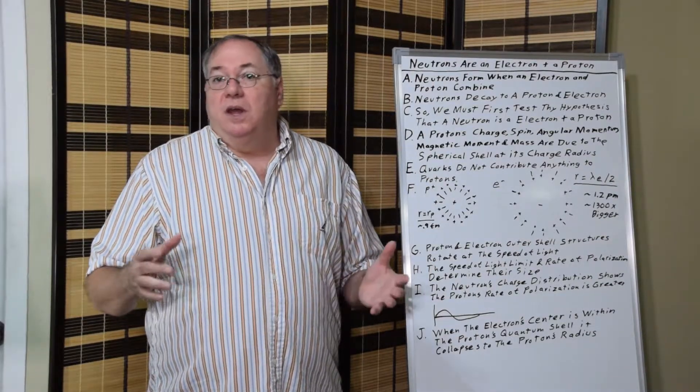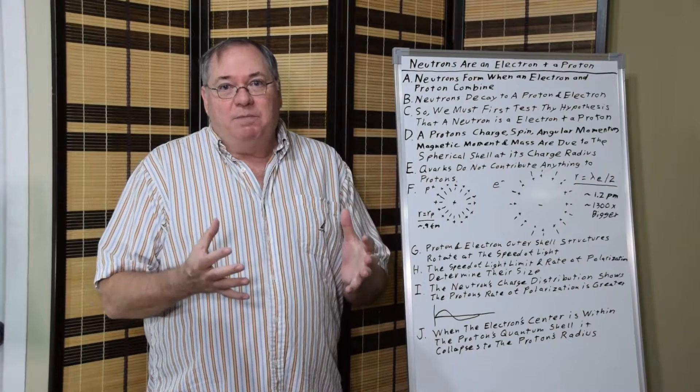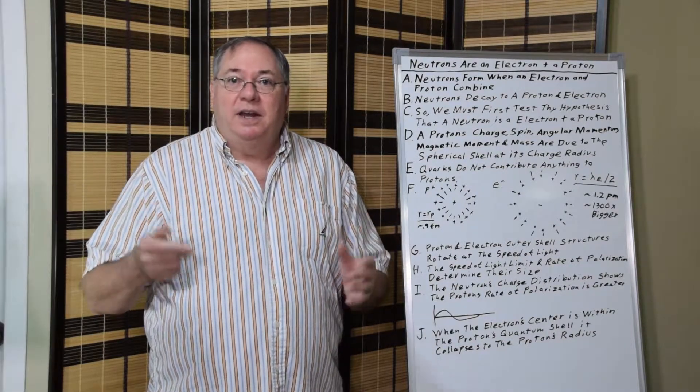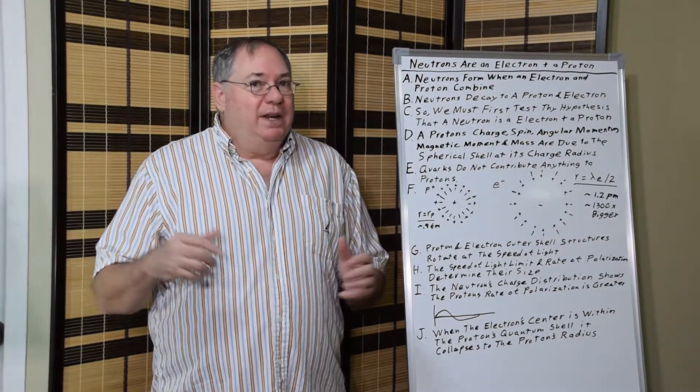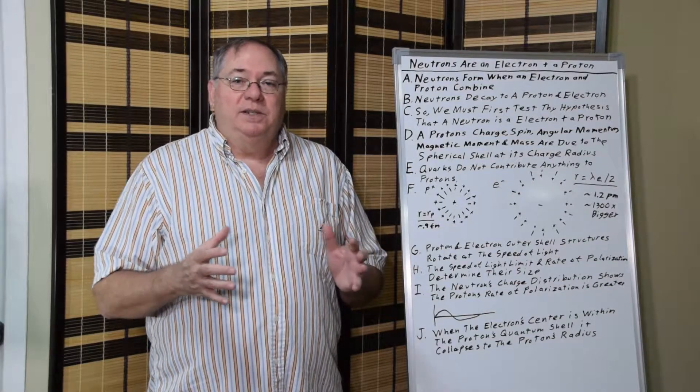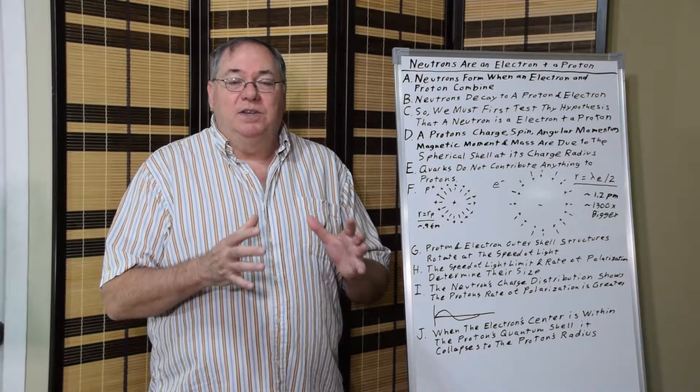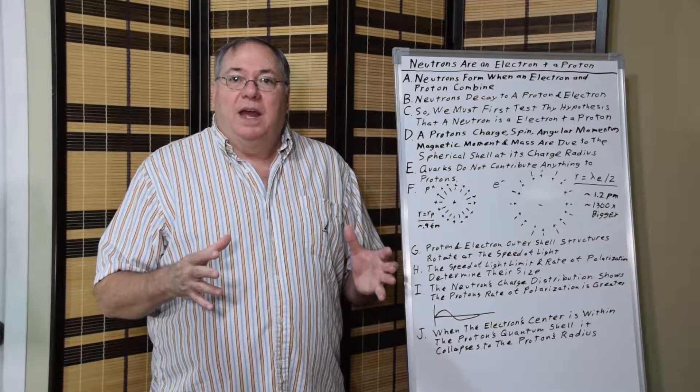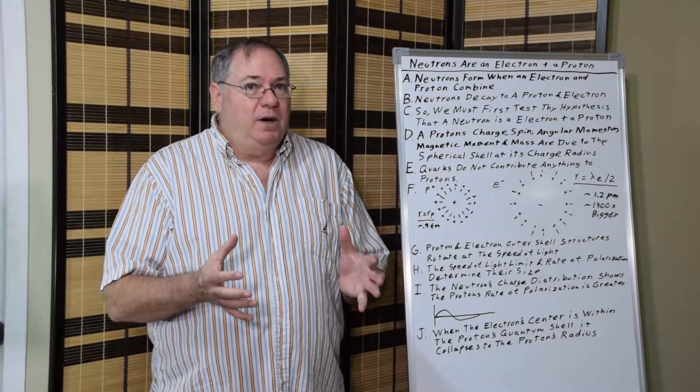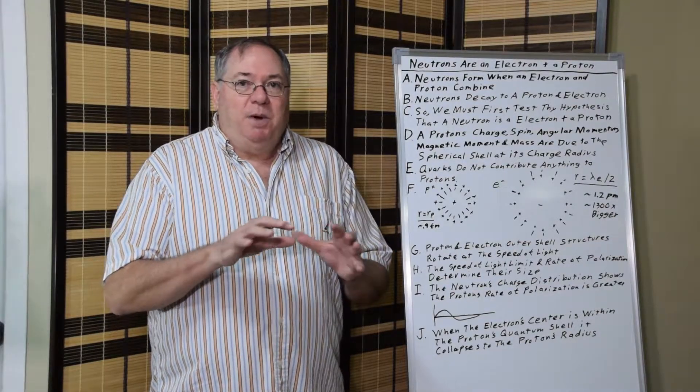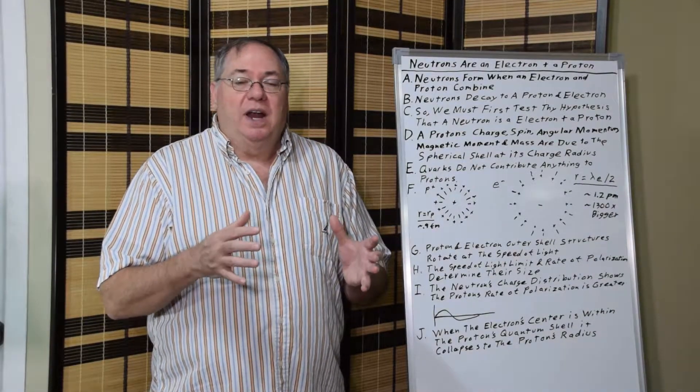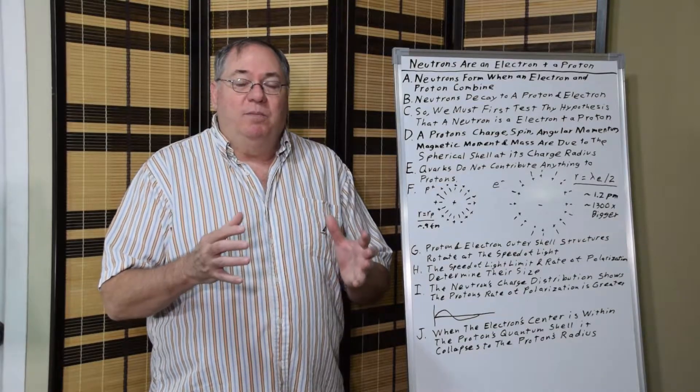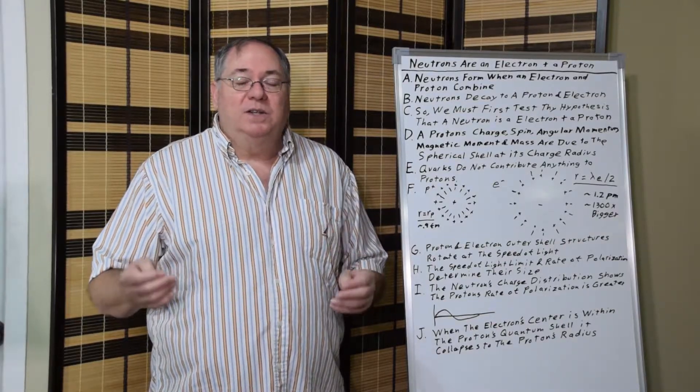And we know that a proton has a shell because of scattering experiments. There have been lots of scattering experiments and measurements of this charge radius. And Richard Feynman came up with the idea that this radius was populated with partons, and that these partons formed a structure, and this structure could deform inelastically causing scattering.